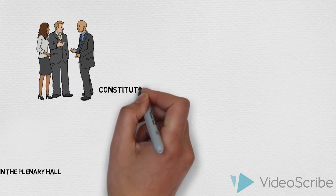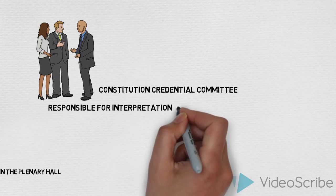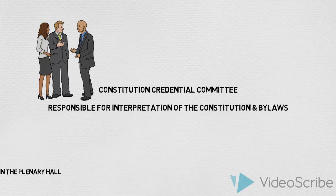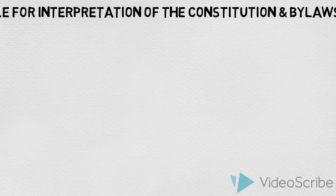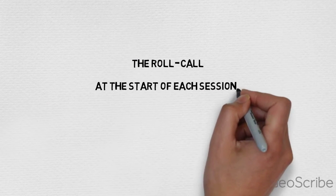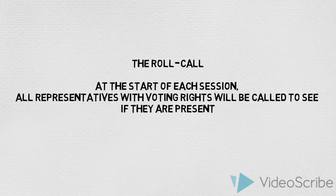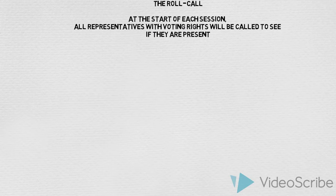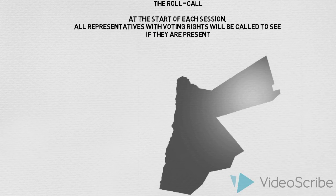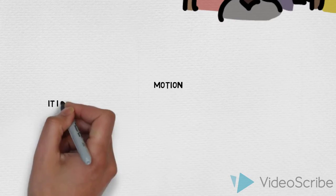The constitution credentials committee is responsible for interpretation of the constitution and bylaws. The roll call: at the start of each session, all representatives with voting rights will be called to see if they are present, and voting cards will be handed out.